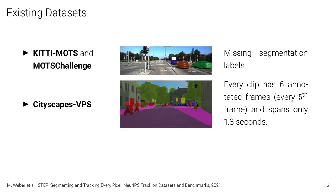Existing datasets tackle this task only partially in our opinion. There exist the MODS datasets for KITTI and MOD Challenge, but those have only pixel-level annotations for the trackable instances. Therefore, a large portion of the image remains unlabeled. Then there's also the Cityscapes Video Panoptic Segmentation dataset, but there every clip has only six annotated frames, which means they span less than two seconds. Therefore, this dataset is much more focused on segmentation, whereas we propose a dataset that also requires long-term tracking.